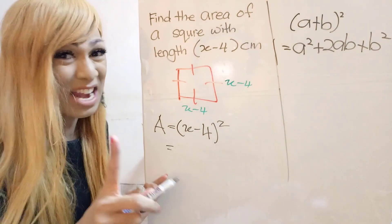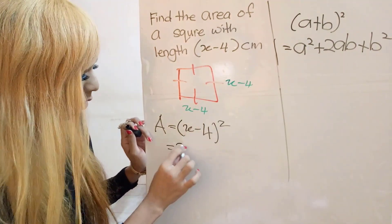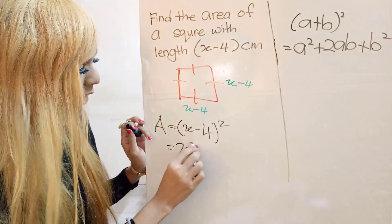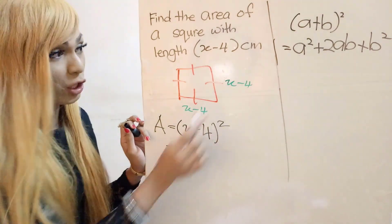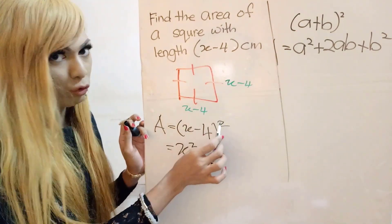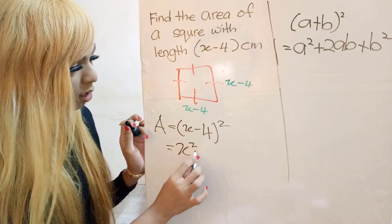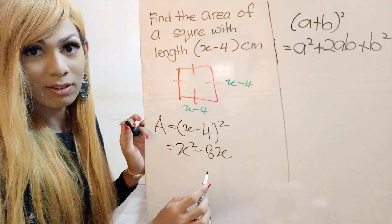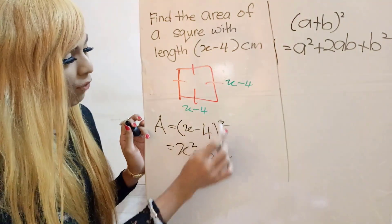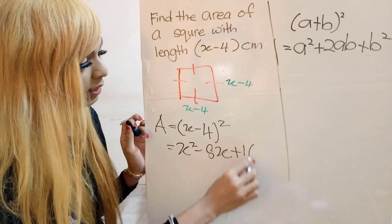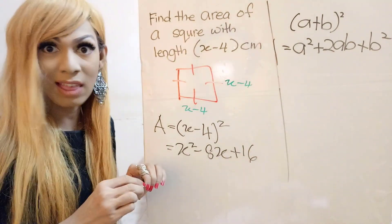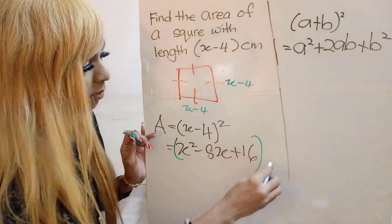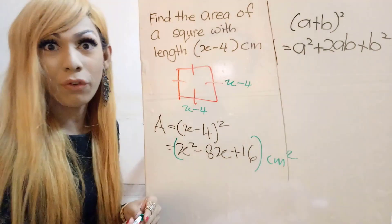Using the binomial formula: a squared gives x squared. Then 2ab is 2 times x times negative 4, which gives negative 8x. Then b squared: (negative 4) squared gives positive 16. So the area is x squared minus 8x plus 16 cm squared.